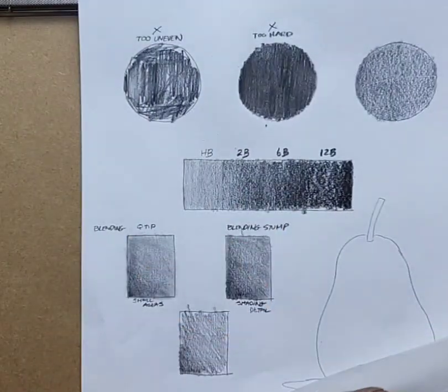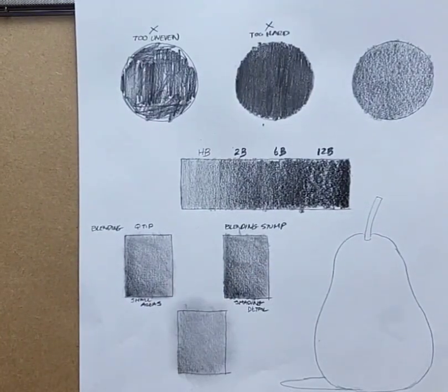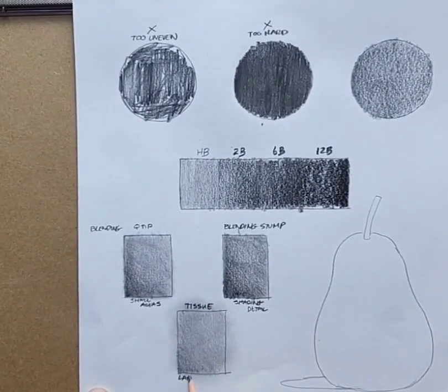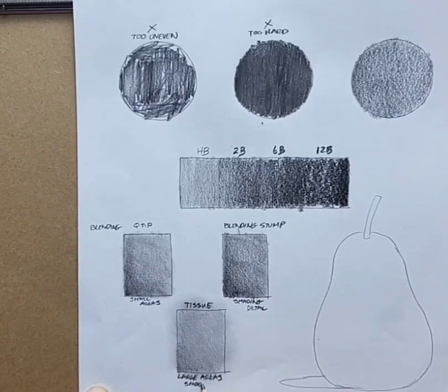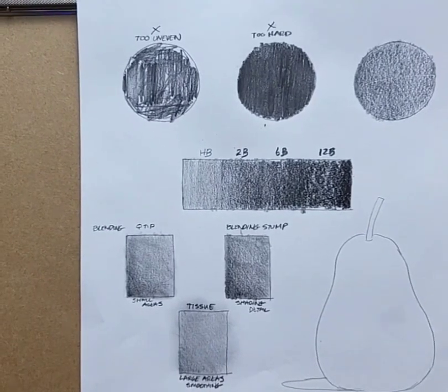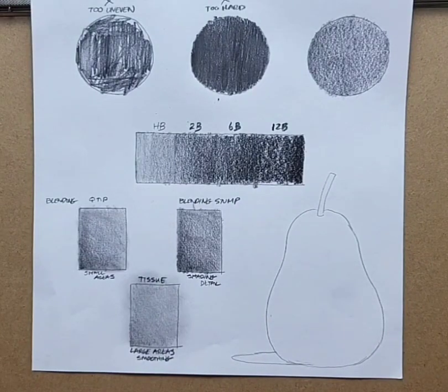The Q-tip is a little smoother, but the smoothest of all three to me is a tissue, where you can put this on your finger or just use the tissue. You can get a nice smooth blend, and I tend to use that to smooth areas or for large areas.